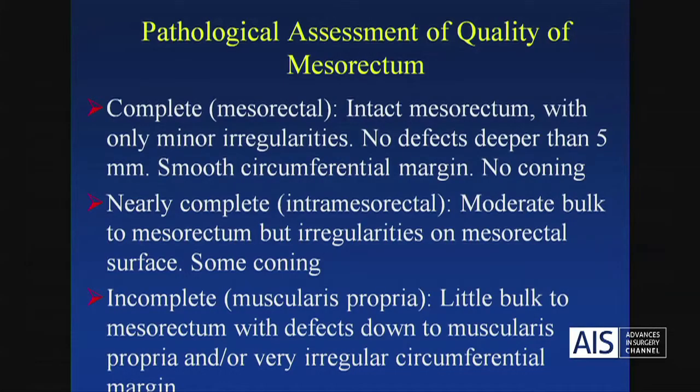Here you can see the posterior aspect, what we call the rectal buttocks. This is a case that had been fixed for 48 hours, so you can see better the fibers of the mesorectal fascia, which have this kind of whitish color.